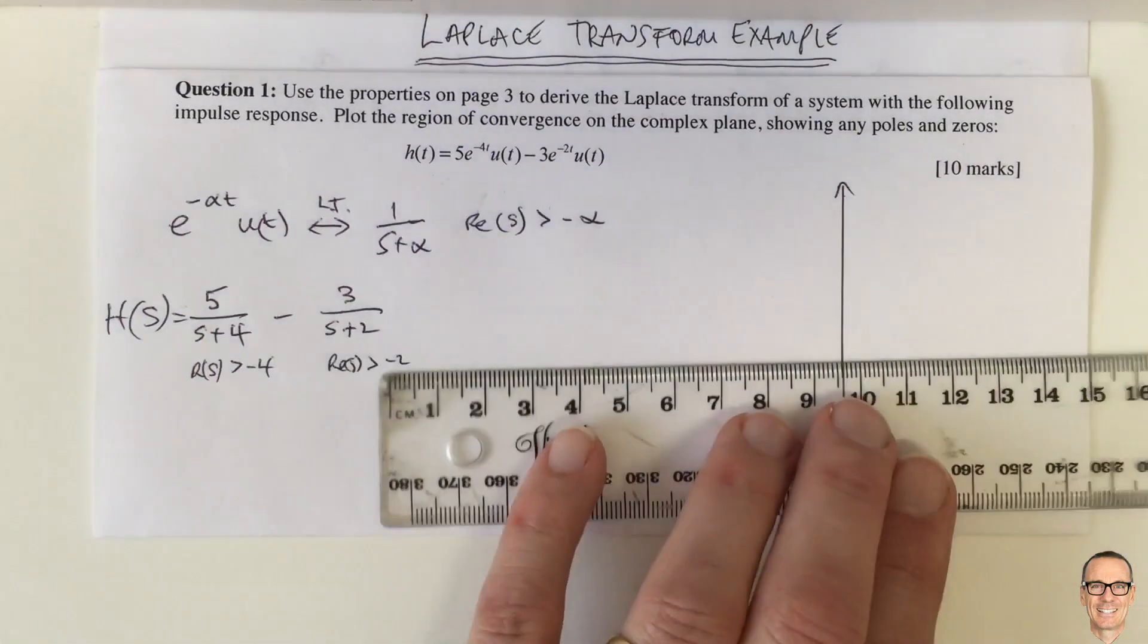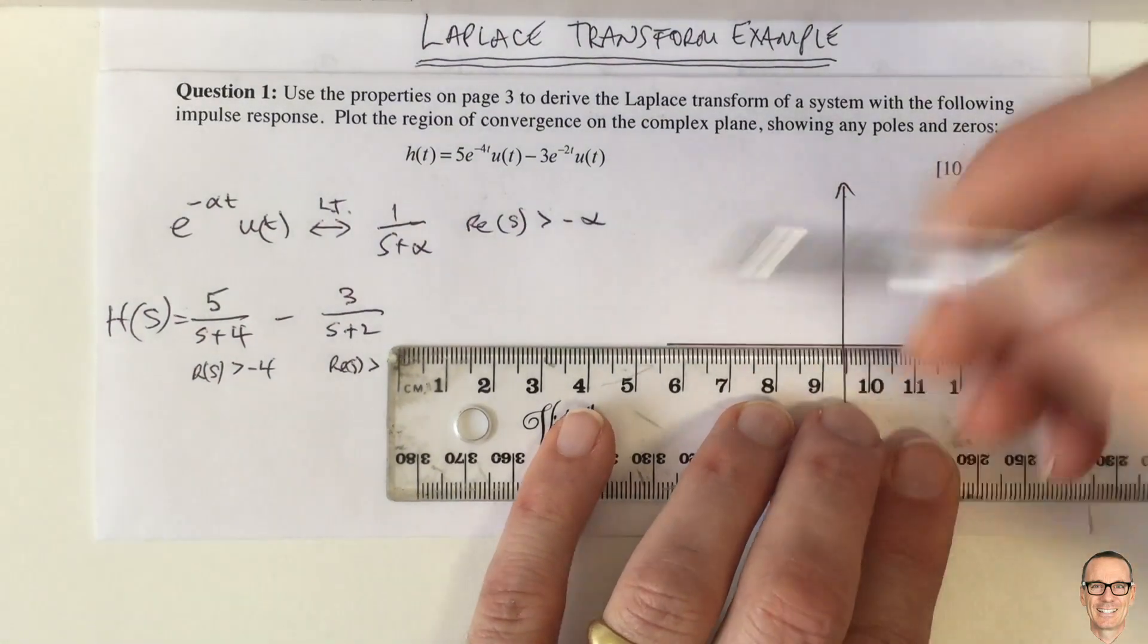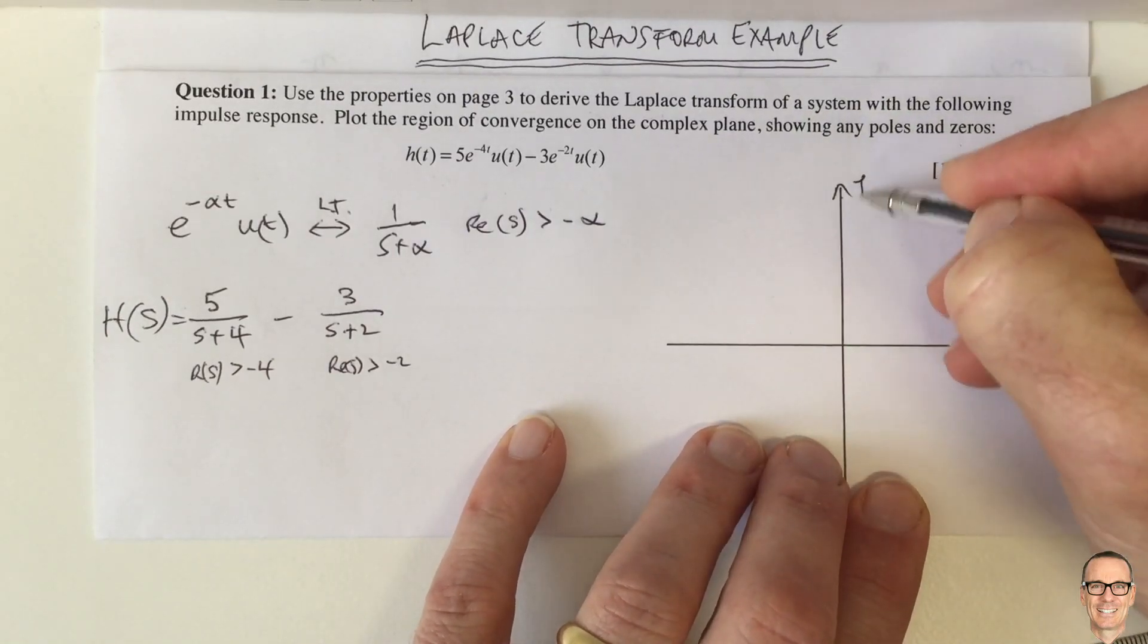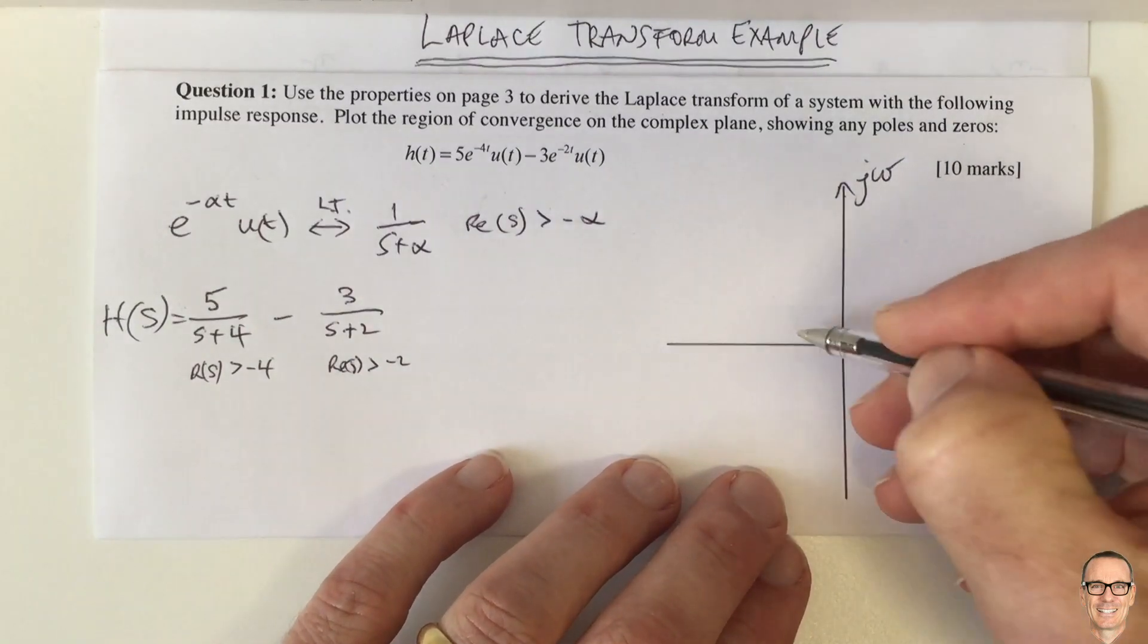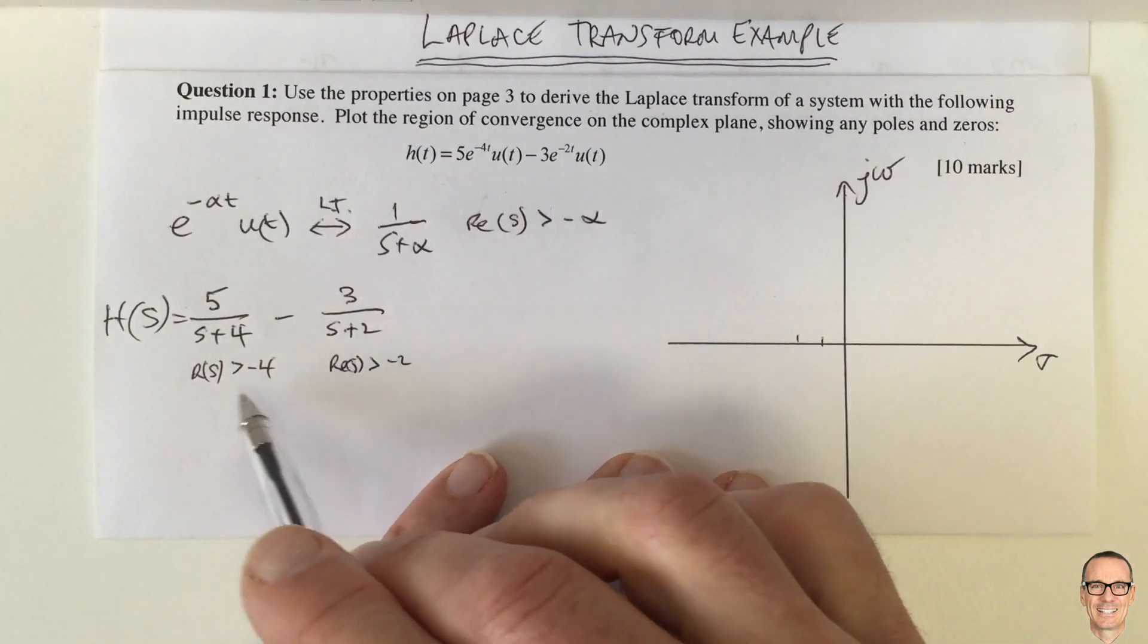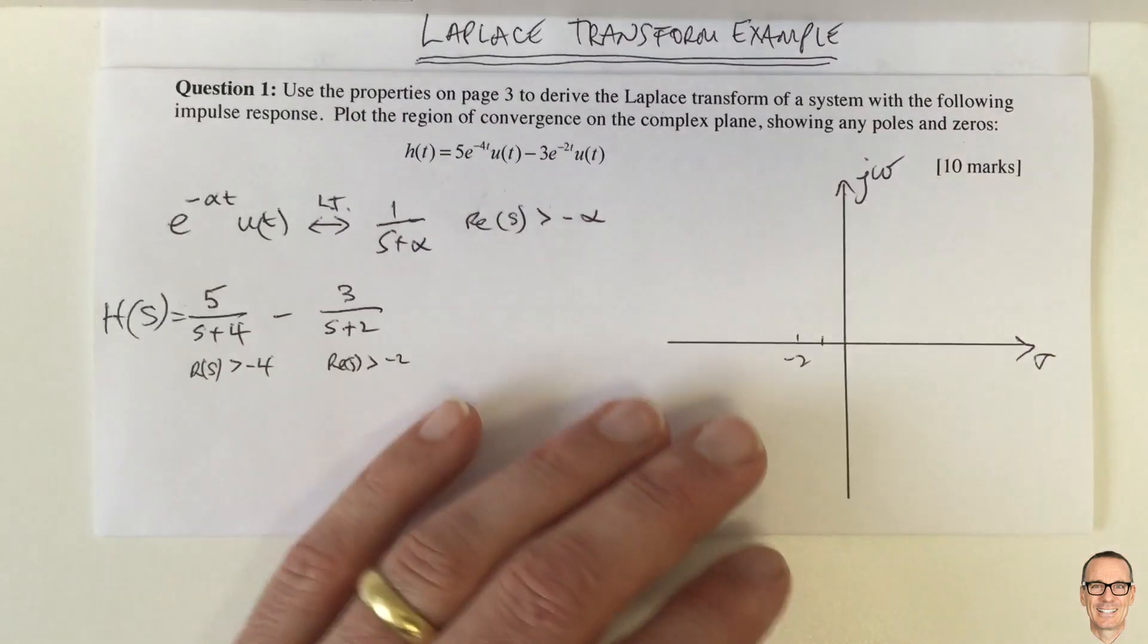That's where there's an overlap in those two regions. Okay, and we label our axes, this is sigma, this is j omega, and minus 2, when the real part of s is bigger than minus 2, this is minus 2.